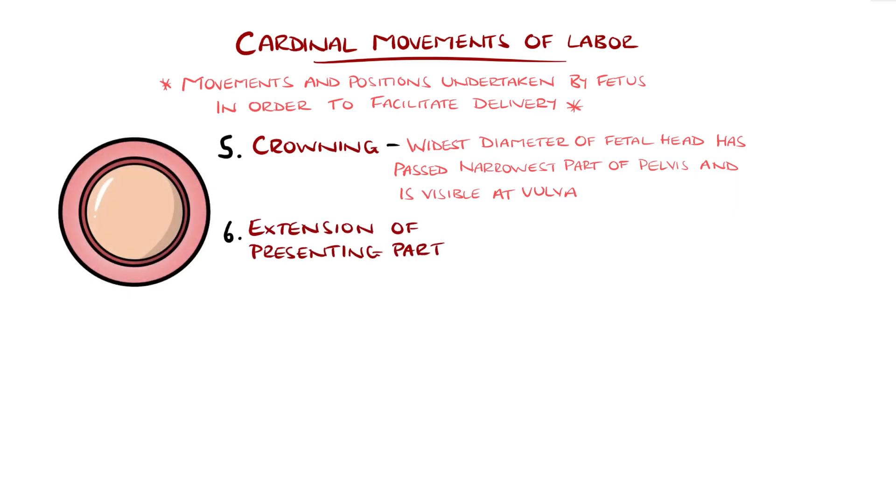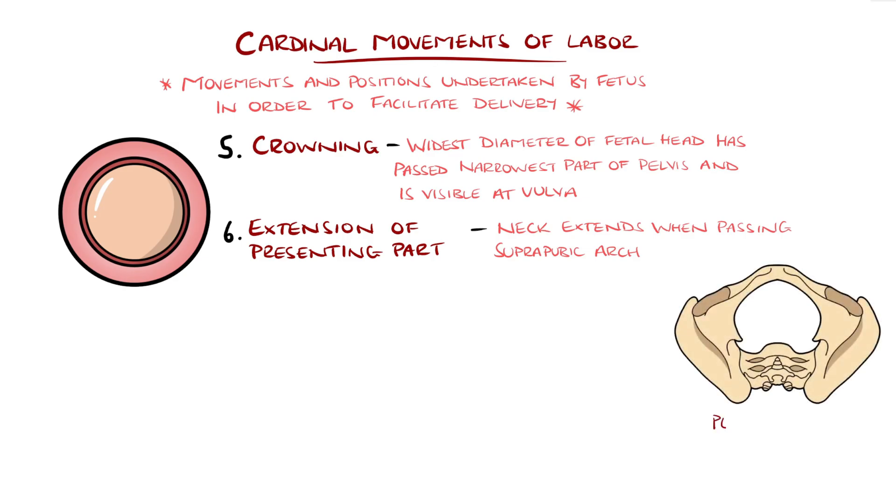Then we have extension of the presenting part. As the fetus progresses, once it passes beneath the suprapubic arch, this allows for its neck to extend and will typically be facing the maternal posterior.